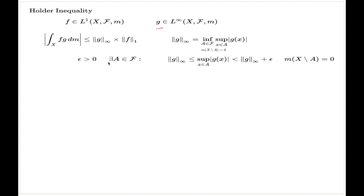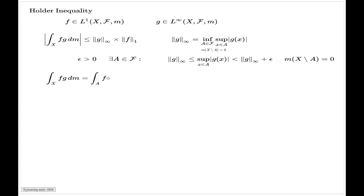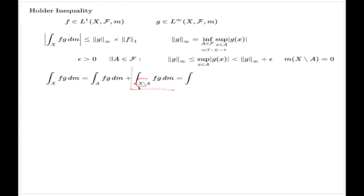Given such a set, I can argue this inequality almost straightforwardly from the comparison principle. First, I observe that the integral can, by additivity, be split into the integral over A and the integral over the complement of A. The piece over the complement is zero because that set has measure zero. So we end up with just the integral over A.